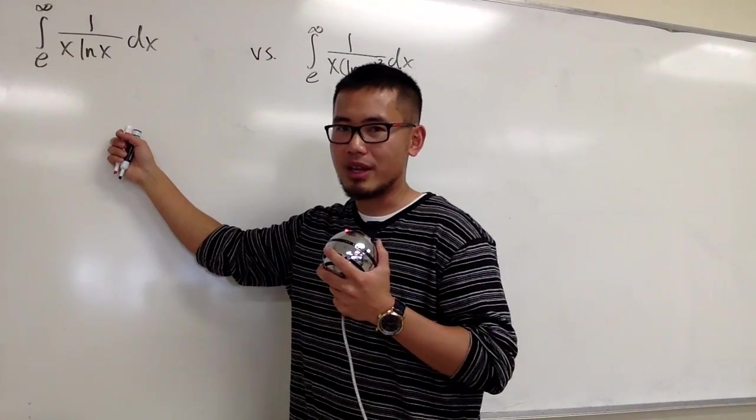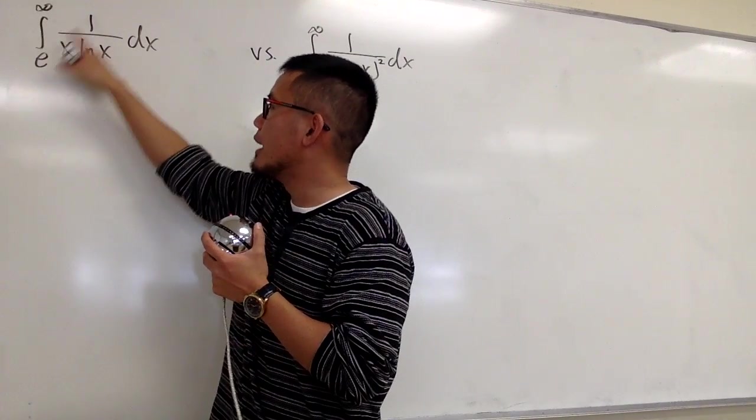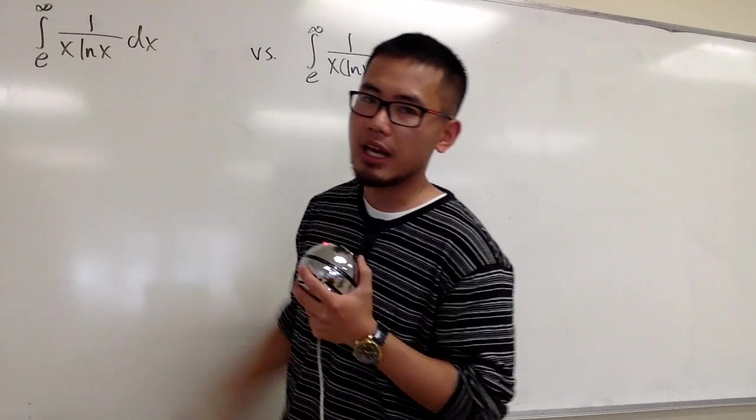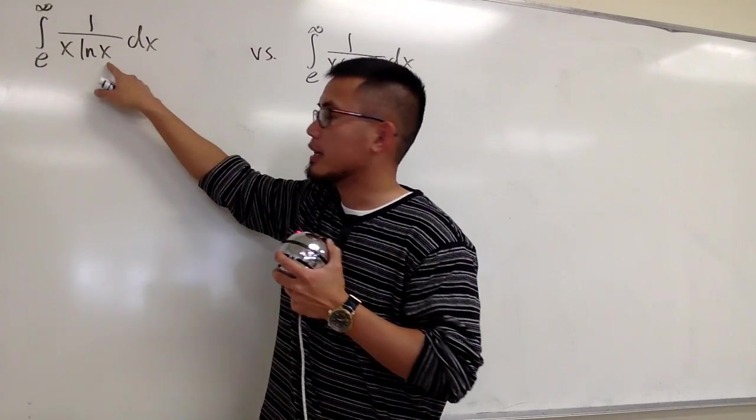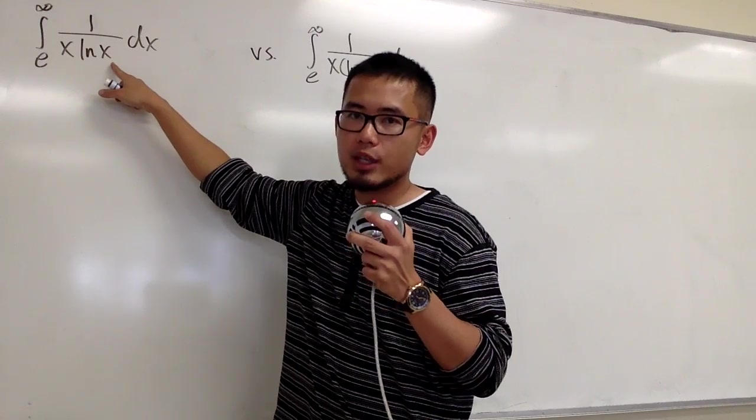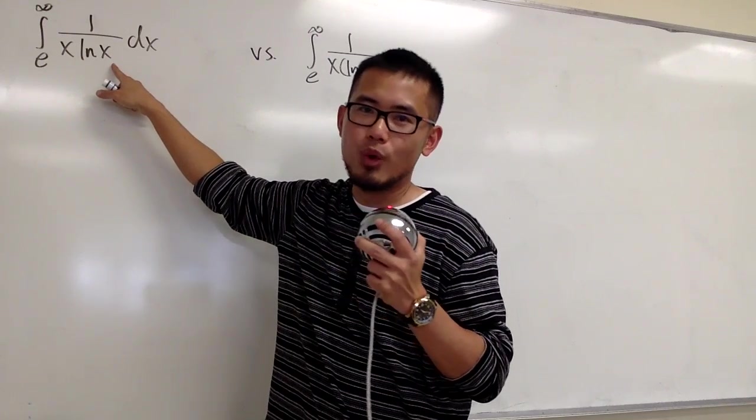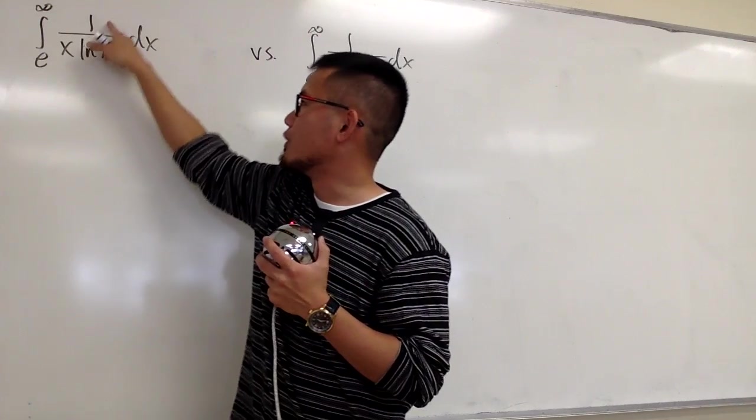Let's look at the first one. We have to first integrate 1 over x times ln(x). How can we do that? I see that I have ln(x) right here, and I know the derivative of ln(x) is 1 over x. And I have the 1 over x right there.